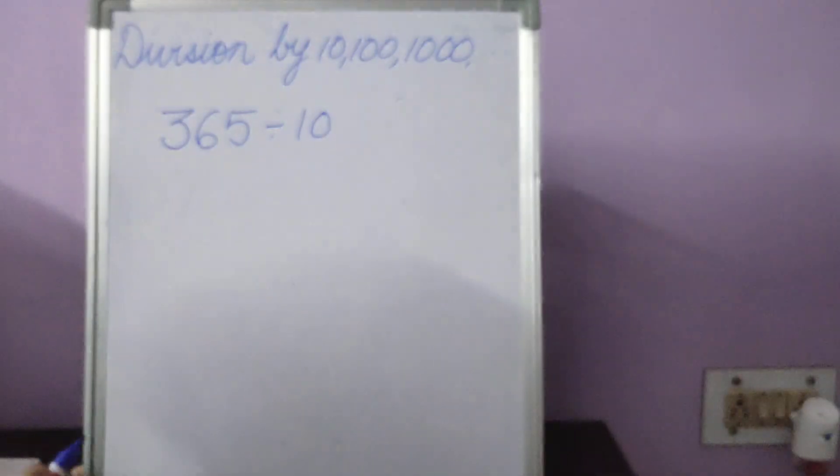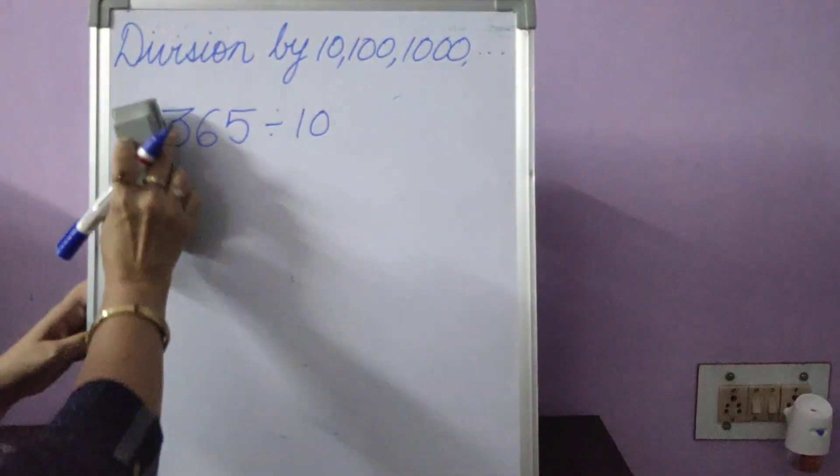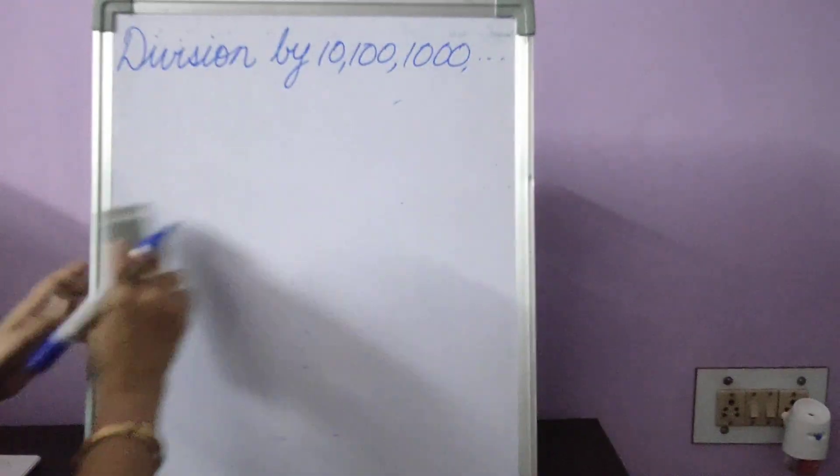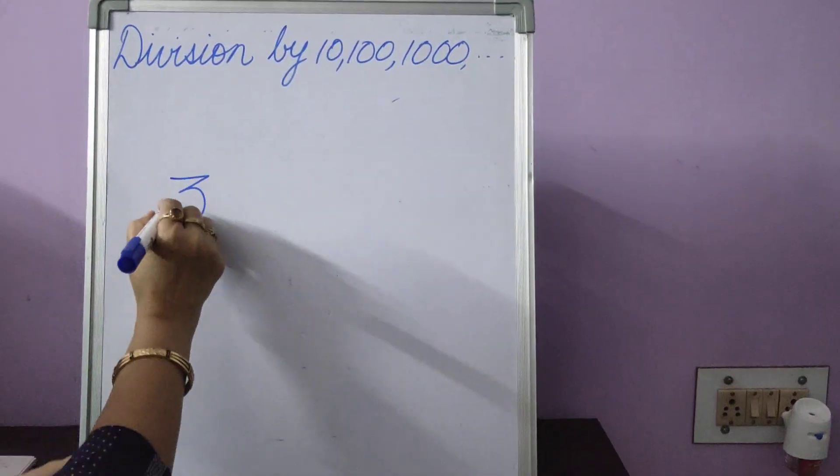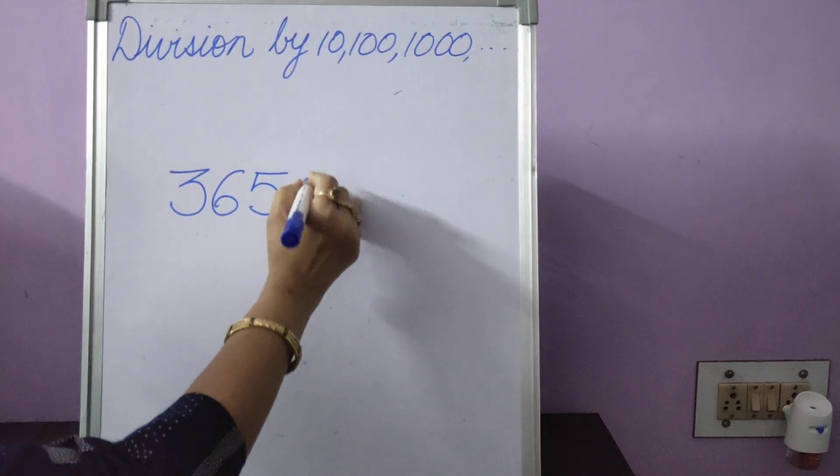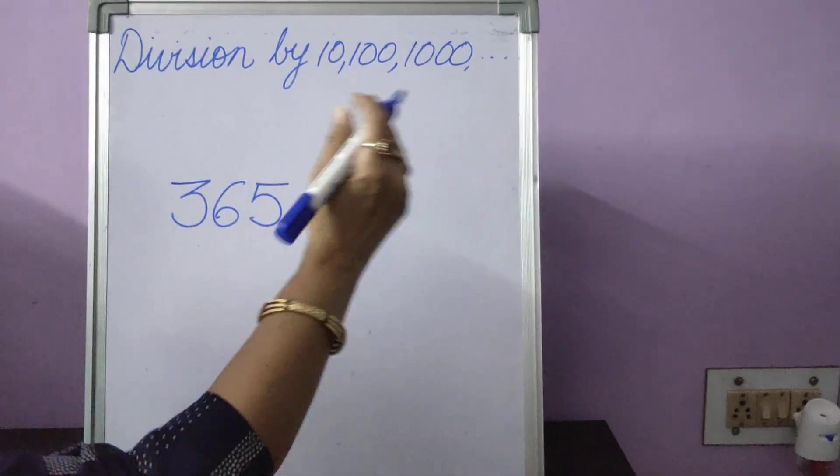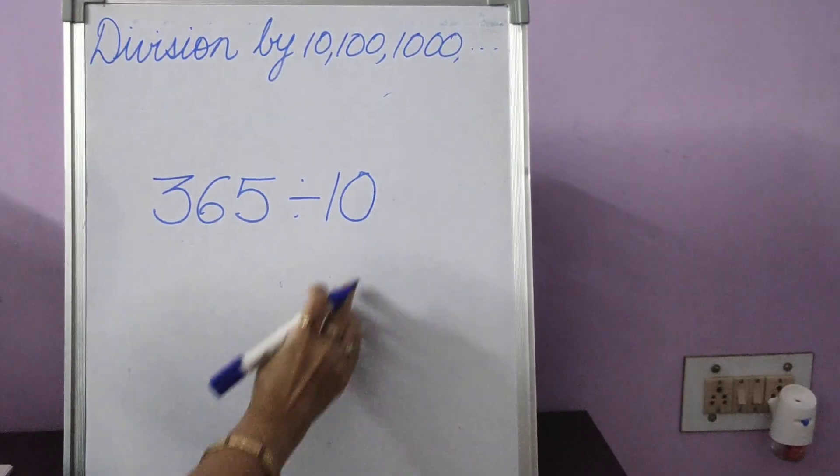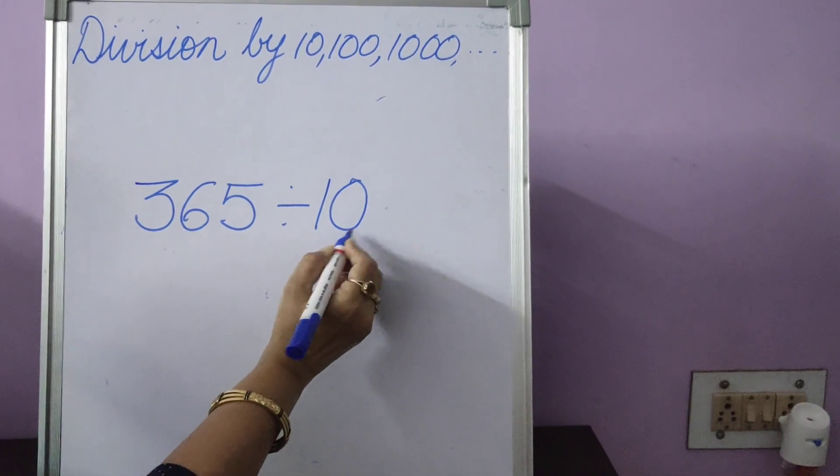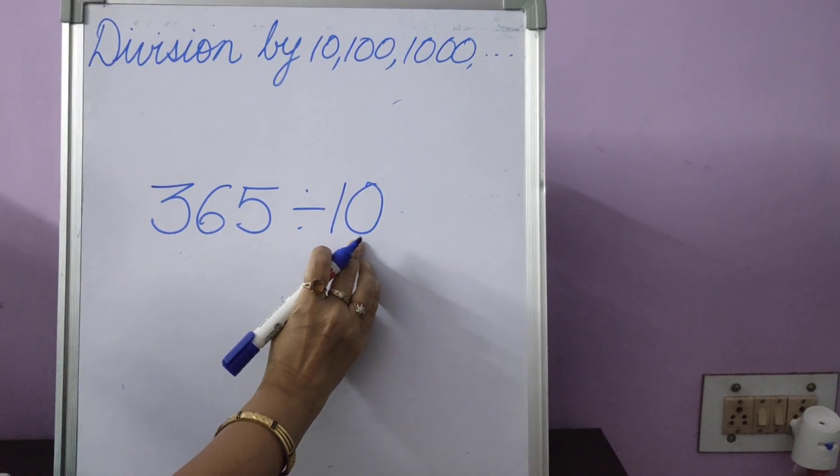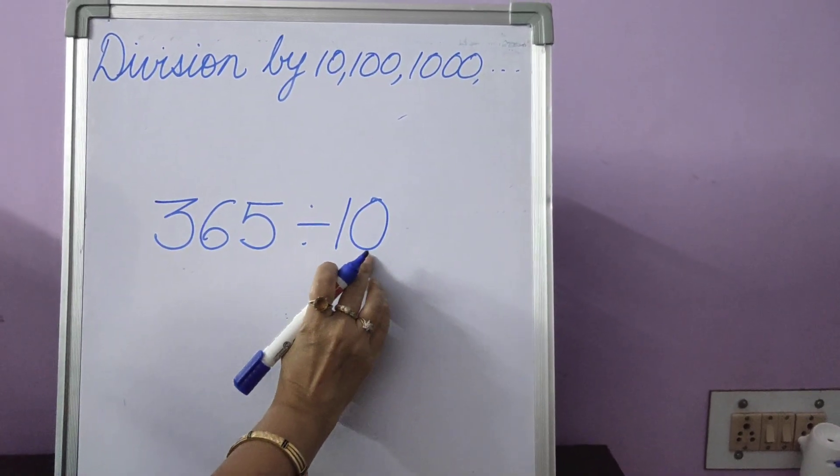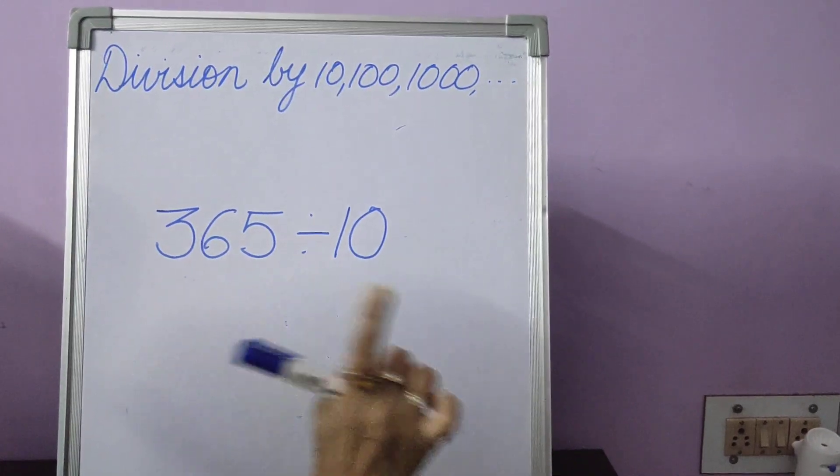Same sum, 365 divided by 10. What do we do? We are not going to do the long division method. And children, this method you can follow only when you are dividing by 10, 100, 1000 and so on. Look at the divisor by 10. How many zeros are there in 10? There is only one zero in 10. So remember one place.